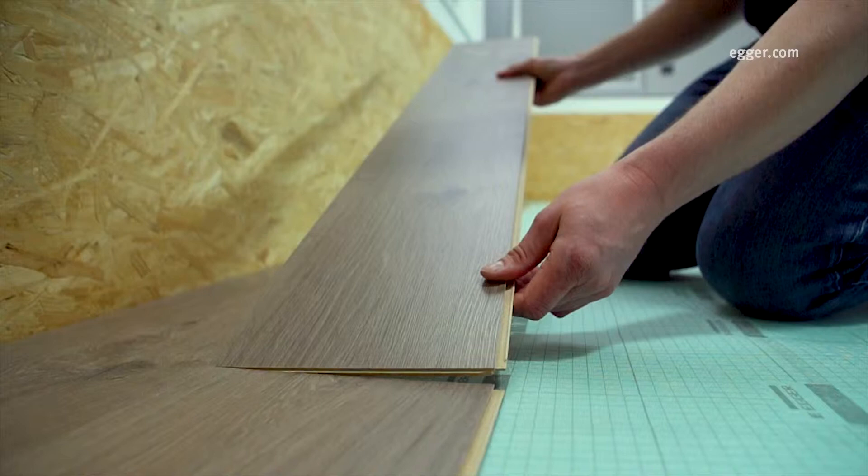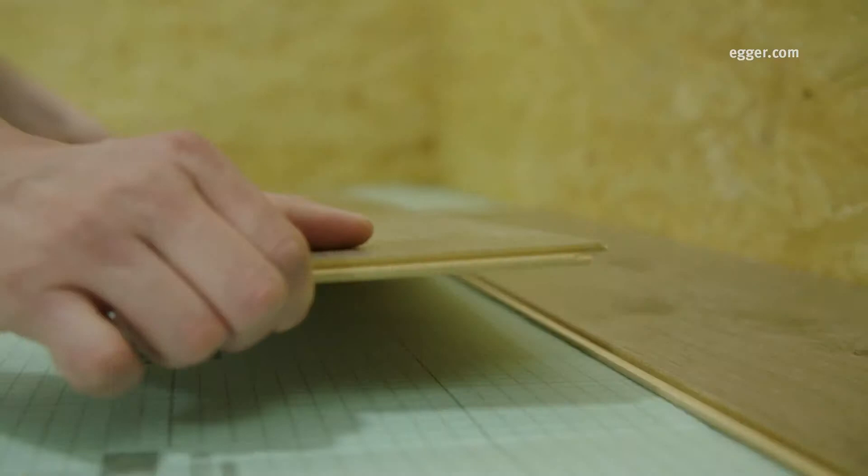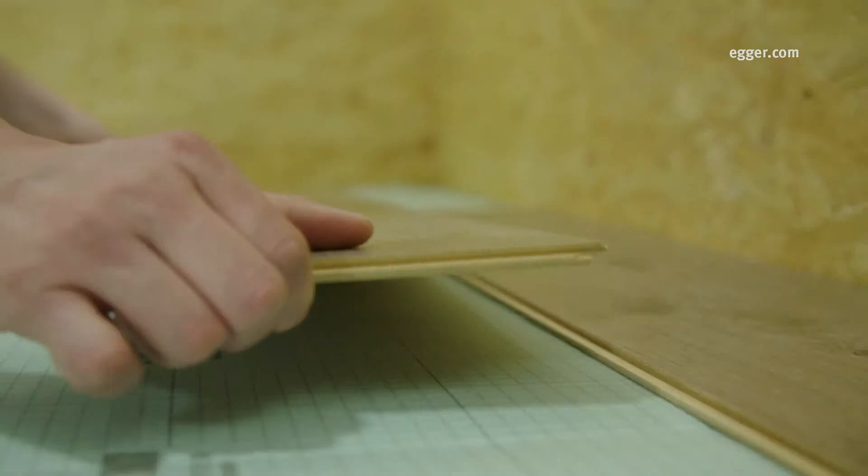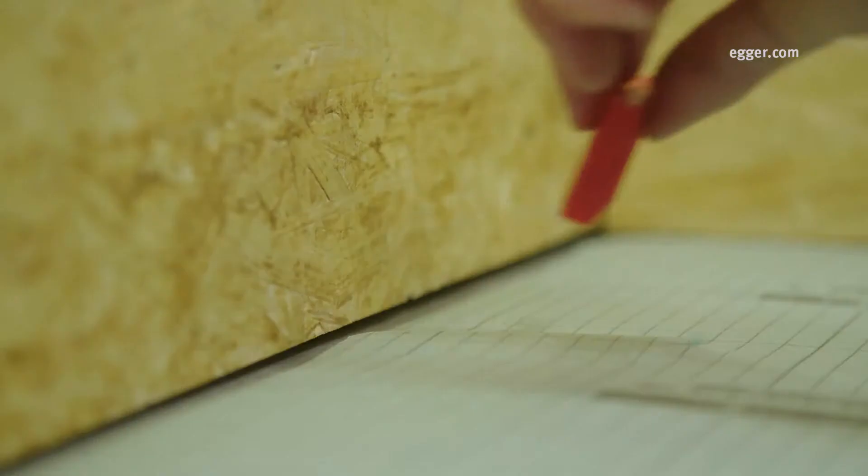The first two floorboards, and all other floorboards in the first row, are angled at the gable end. It is important that at first the lengthwise tongue is only placed loosely on the groove.